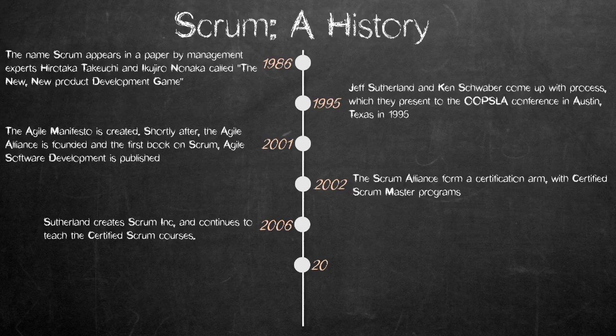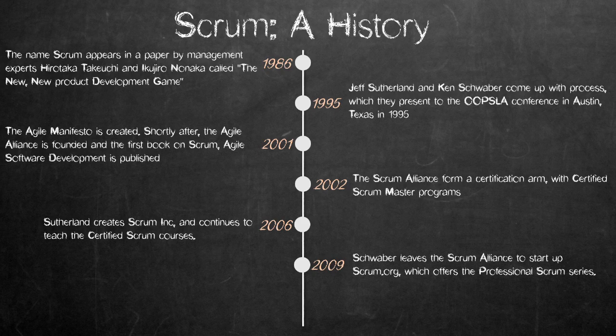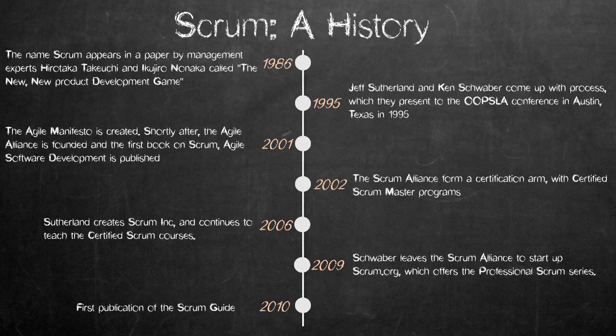Schwaber left the Scrum Alliance in late 2009 and founded Scrum.org, which oversees the Parallel Professional Scrum Accreditation Series. Since 2010, a published document called the Scrum Guide has been published and updated by Schwaber and Sutherland. It has been revised five times, with the current version being November 2017.